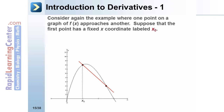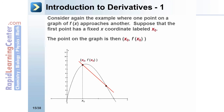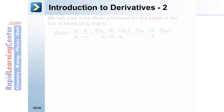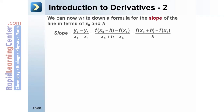Consider again the example where one point on the graph of f approaches another. Suppose the first point has a fixed x-coordinate labeled x sub 0, so the point on the graph is (x₀, f(x₀)). The other point on the graph is h units away, making its x-coordinate x₀ + h, with the corresponding point (x₀ + h, f(x₀ + h)).